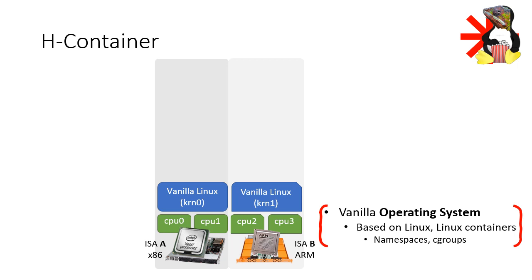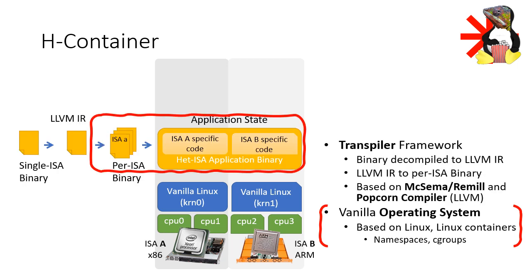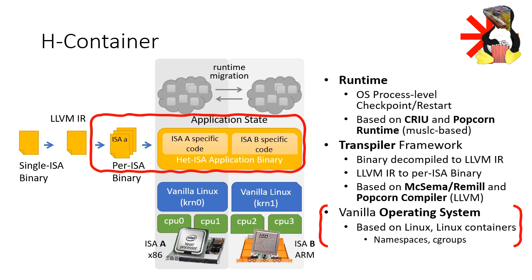Edge Container is based on vanilla Linux. It doesn't require any Linux kernel modifications. However, it requires that all servers — x86 or ARM — feature a Linux kernel that supports namespaces and cgroups. Atop the operating system, Edge Container introduces a transpiler framework, which is a tool that takes as an input an executable binary, for example for ARM or x86, decompiles it into LLVM IR — what we called the ISA-agnostic form — and then compiles the LLVM IR into an executable per ISA that is able to migrate between CPUs of diverse ISAs. We base the transpiler on McSema, and the Popcorn Linux compiler. The last component is a runtime process-level checkpoint-restart library, which is based on CRIU and Popcorn runtime libraries.